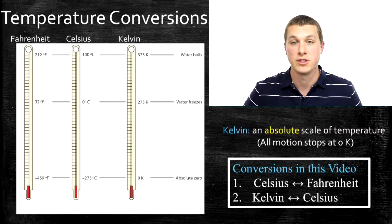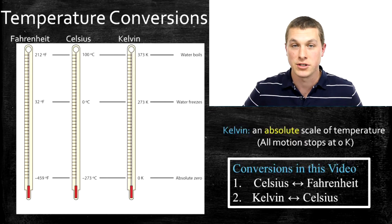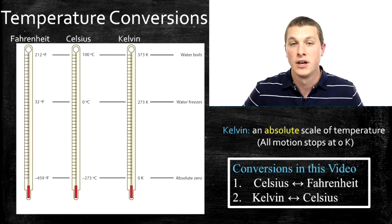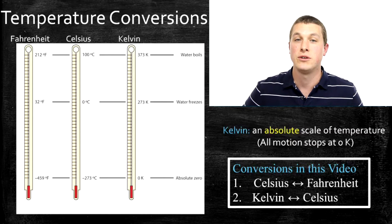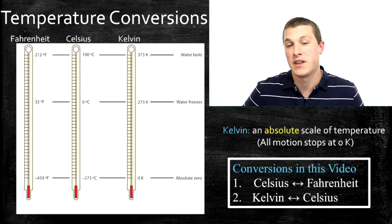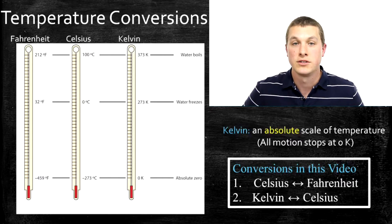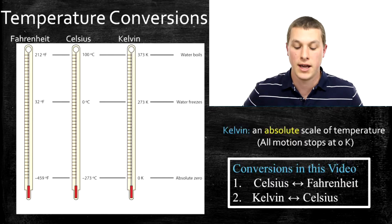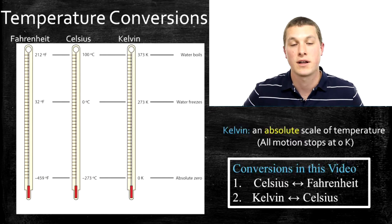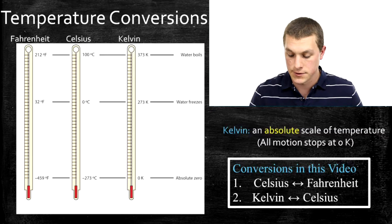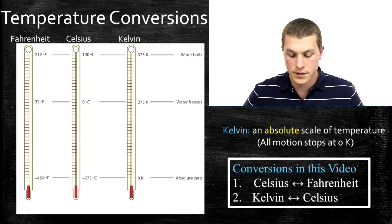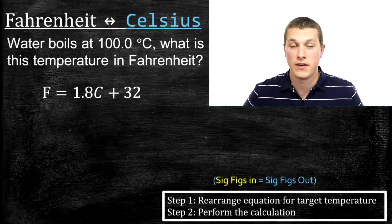What Kelvin does is set zero as that point of absolute zero — as cold as you can possibly get. Those are the three temperature scales you'll commonly see in chemistry. Kelvin is pretty much unique to the scientific field, so in chemistry we almost always use Celsius or Kelvin. It's important to be able to convert between them, so first we'll talk about going between Fahrenheit and Celsius.